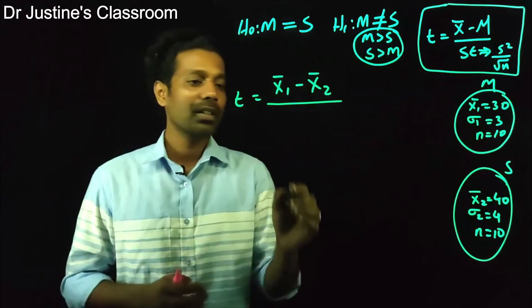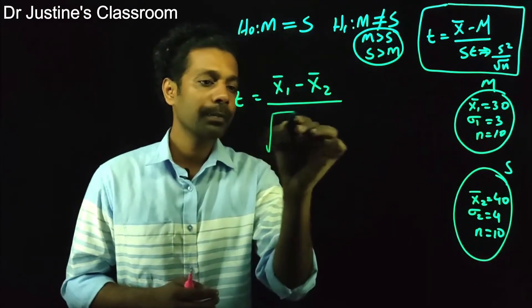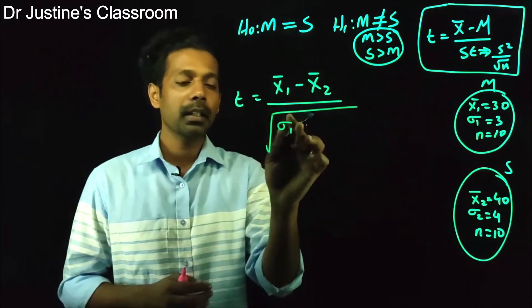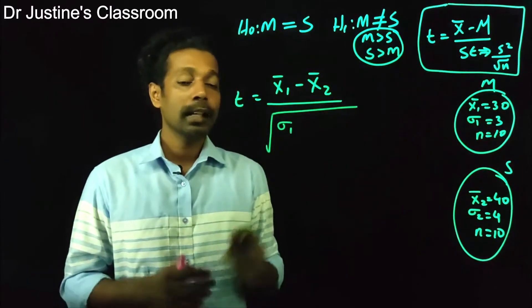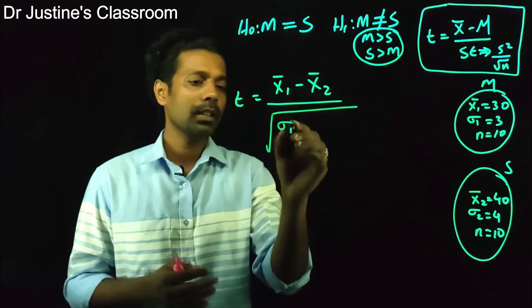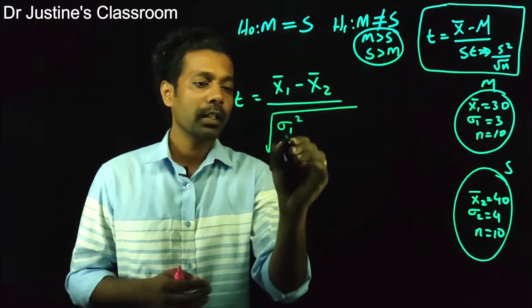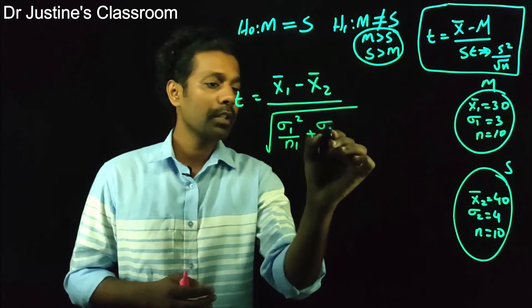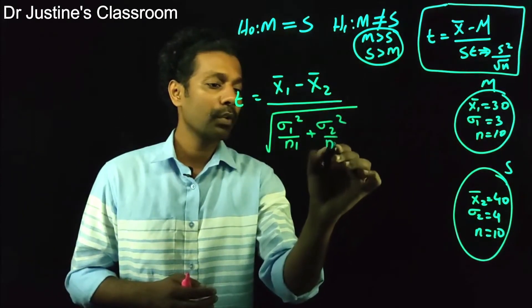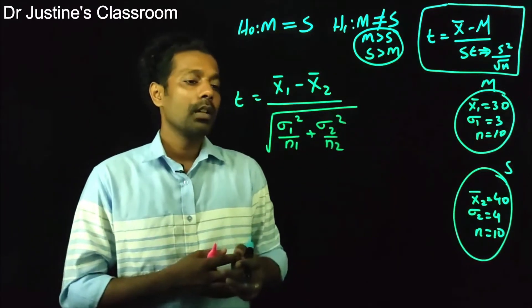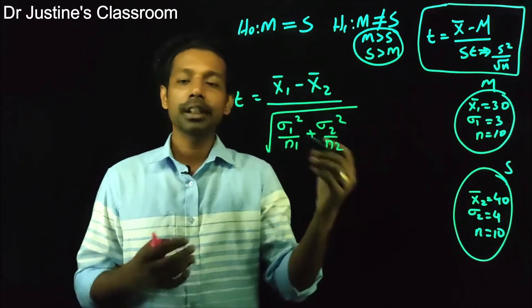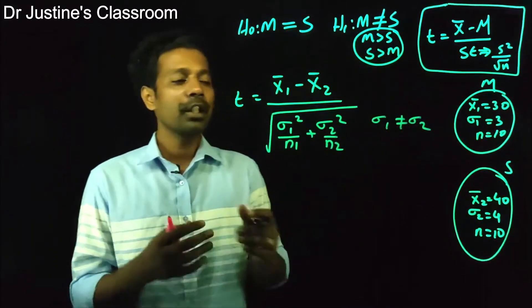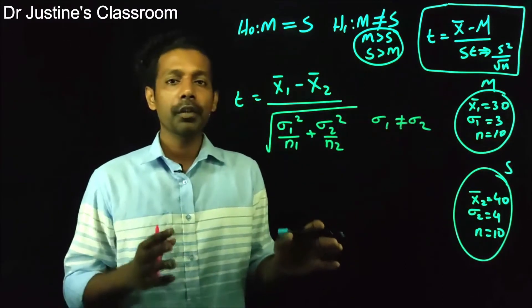The pooled standard deviation is the square root of: (s₁² / n₁) + (s₂² / n₂). This equation is used when the standard deviation of the first group is not equal to the standard deviation of the second group — that is, when equal variance is not assumed. This is the common approach.